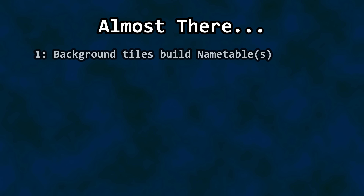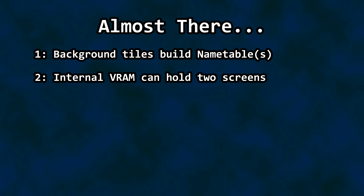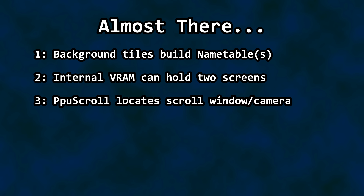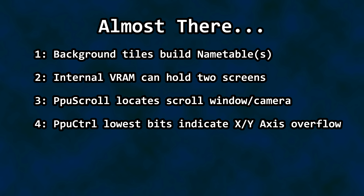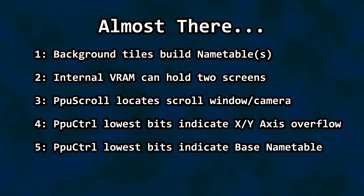So we've talked about how background tile byte values comprise the name table. VRAM inside the NES can hold two times the size of the name table plus attribute table, and therefore two screens. PPU scroll is passed the X and Y coordinates to locate the scroll window. PPU control's lowest two bits indicate if we have exceeded 256 pixels on the horizontal axis, 240 pixels on the vertical axis, or both. And those same two bits from PPU control can be seen as indicating which of the four addresses we should use as our base name table when locating our PPU scroll window's position.